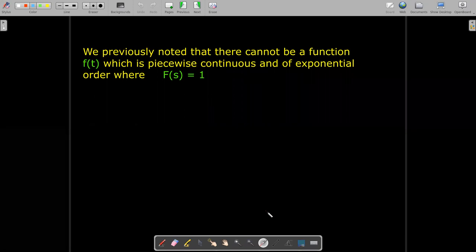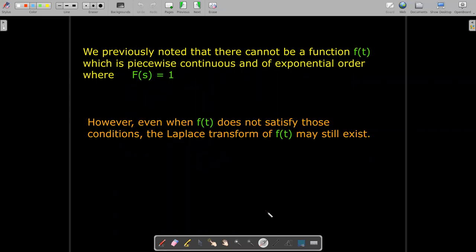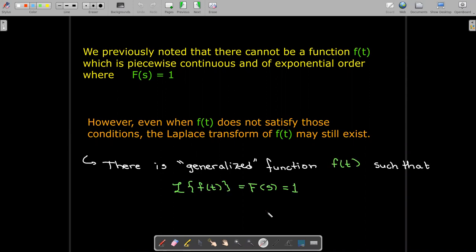But that's if those two conditions hold. If we don't have those two conditions, then the Laplace transform of a function may still exist, and in fact there's a generalized function f(t) whose Laplace transform is the constant one.